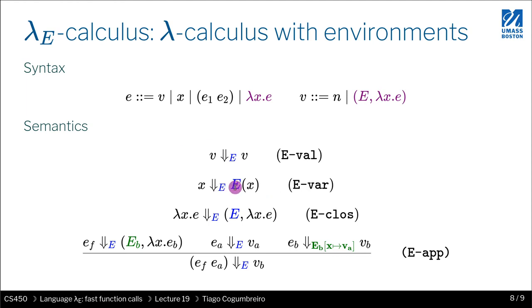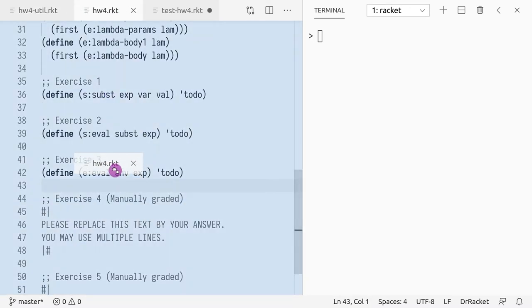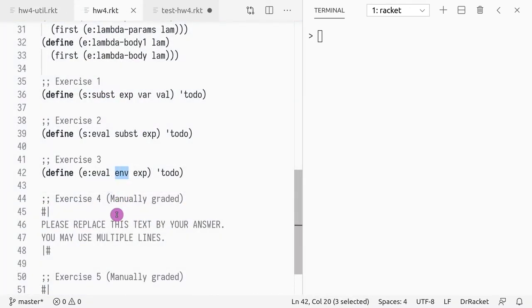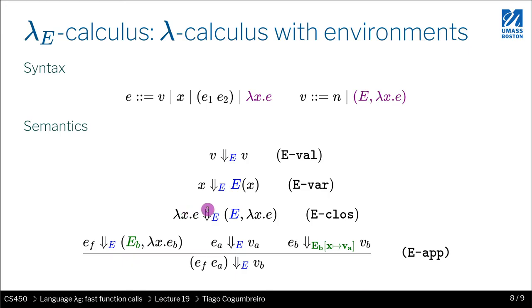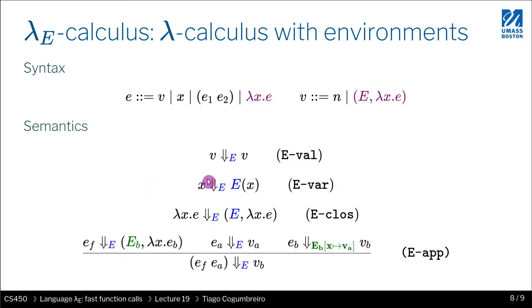If the expression is a variable, we look up variable x in environment e. In homework 4 we have the environment e, and your expression is going to be x, so we just look it up. We covered how to implement this lookup in a previous video that talks about hash tables.